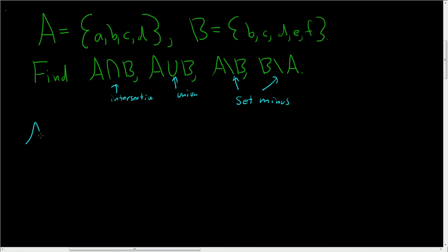All right, so let's find the intersection first. So A intersection B, solution, A intersection B. This is everything in A and everything in B. That means everything they have in common.